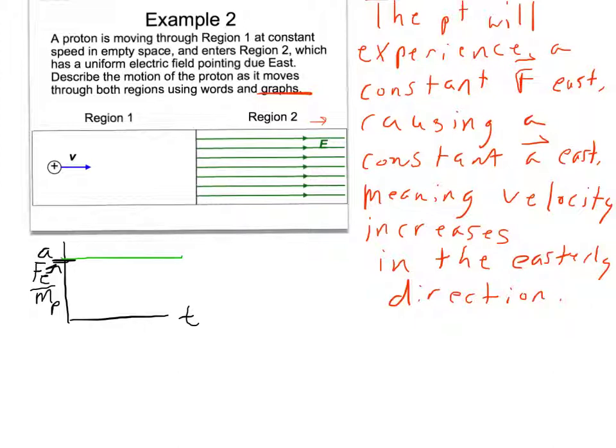And then if we wanted to do a velocity time graph, where we just said our velocity is constantly increasing, so our velocity would constantly increase.